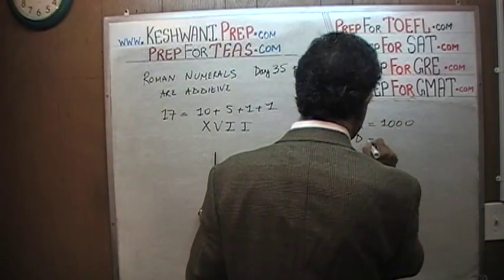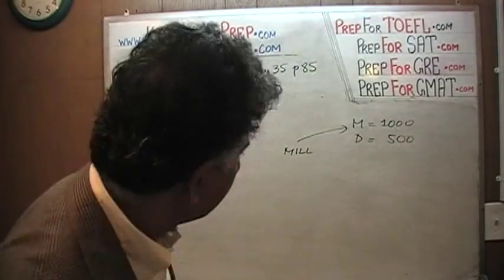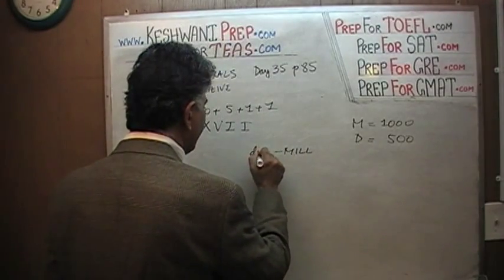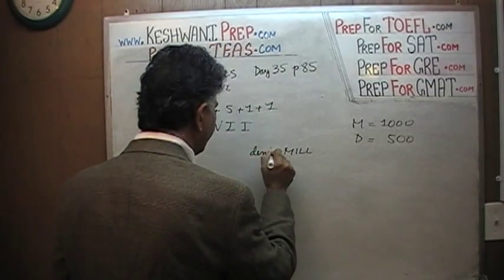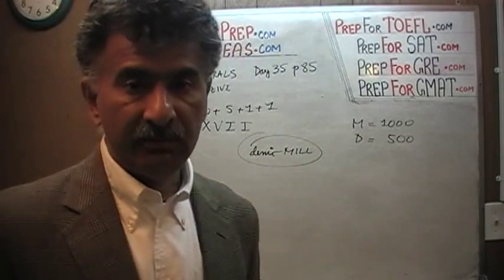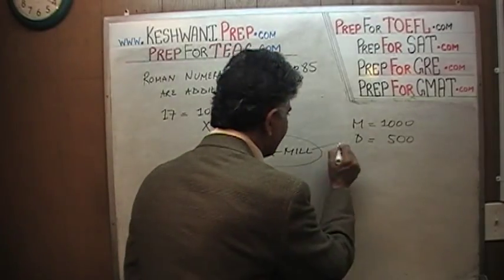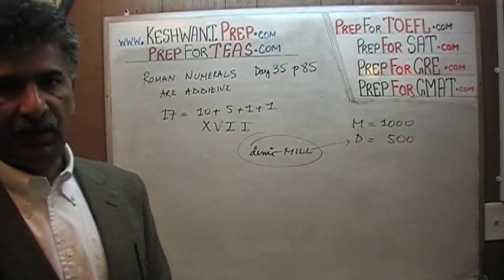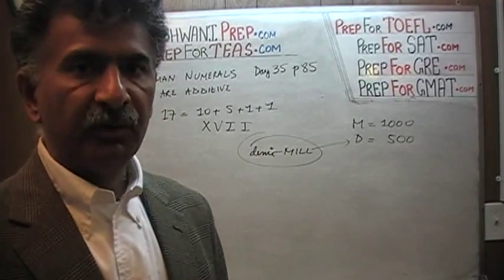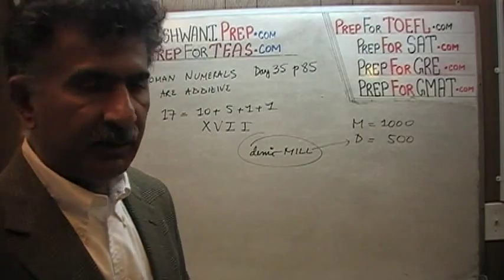Next we have D. D stands for 500. D comes from the fact that they referred to 500 as 'demi-mil' — demi-mil means half a thousand. And hence D stands for 500. If you think logically and make sense out of it, it will be easier to memorize this symbol. D is very simple — it stands for demi, half, demi-mil.